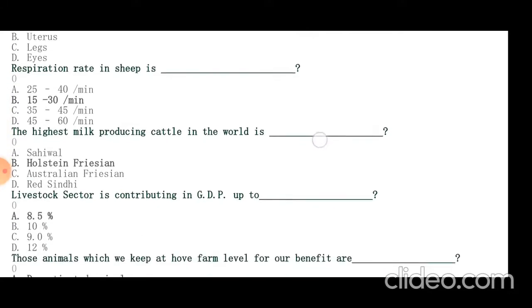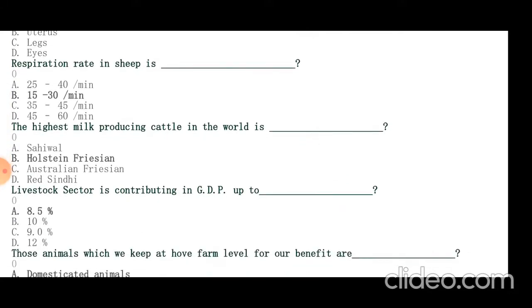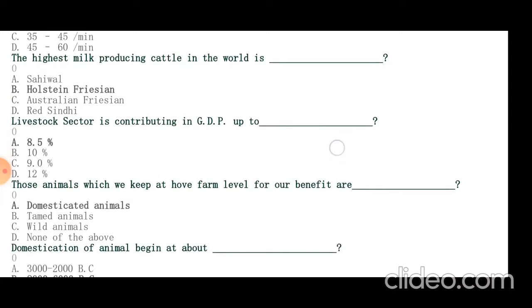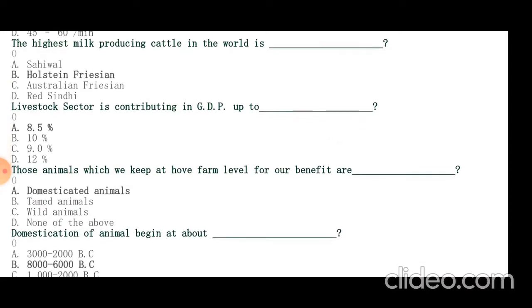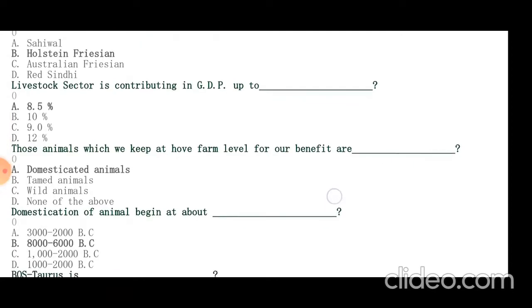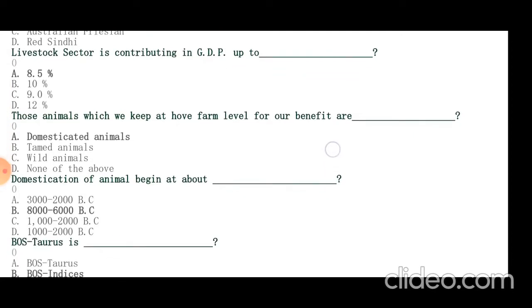Livestock sector is contributing 8.5% in GDP of Pakistan. Animals which we keep at home for our benefit are domesticated animals. Domestication of animals began about 8,000 to 6,000 years before the birth of Christ.